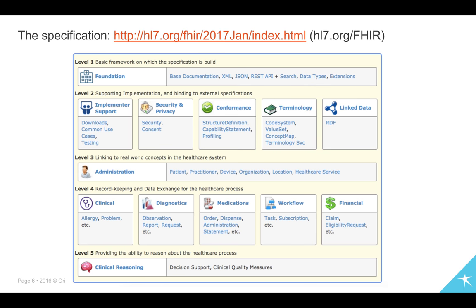The next level are some of the supporting artifacts. So this is where we have the conformance resources, for example, which actually define what a resource looks like and what your own resource looks like, terminology, privacy, security and so forth. And then level 3, we start to bring into more healthcare domain resources, being patient, practitioner and so on and so forth. Level 4, we start to get even more clinical with allergies and with workflow, with financial and such like. And then finally level 5, clinical reasoning. And this is where we're getting into the decision support and the clinical quality measure and such like. So the takeaway I'd like to leave you with from this slide is the breadth of FHIR.